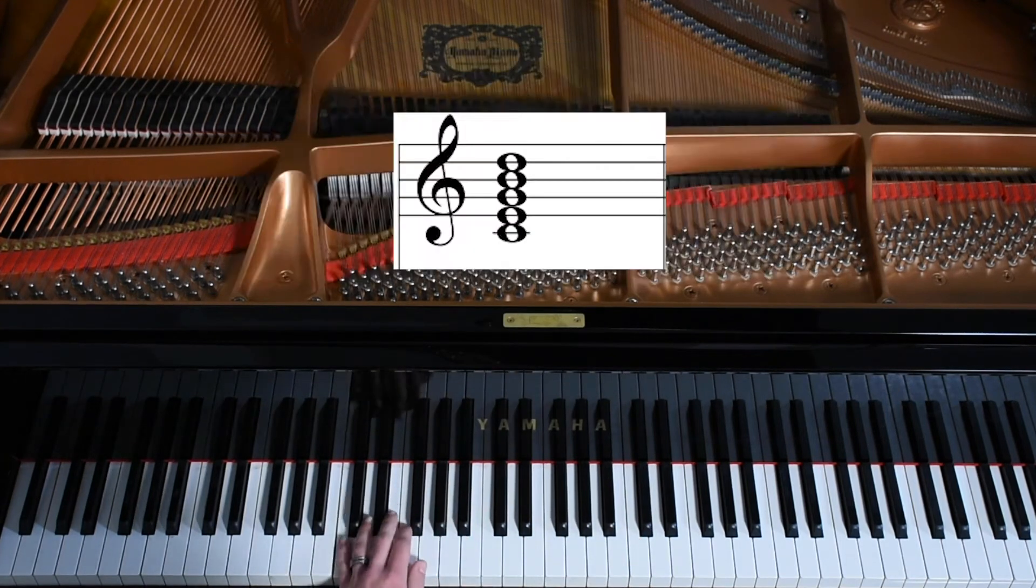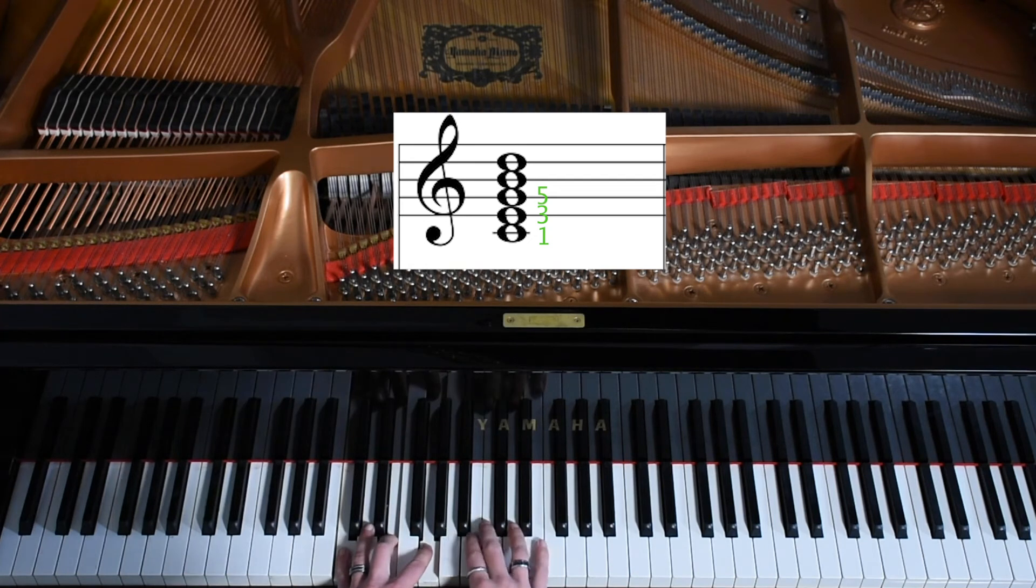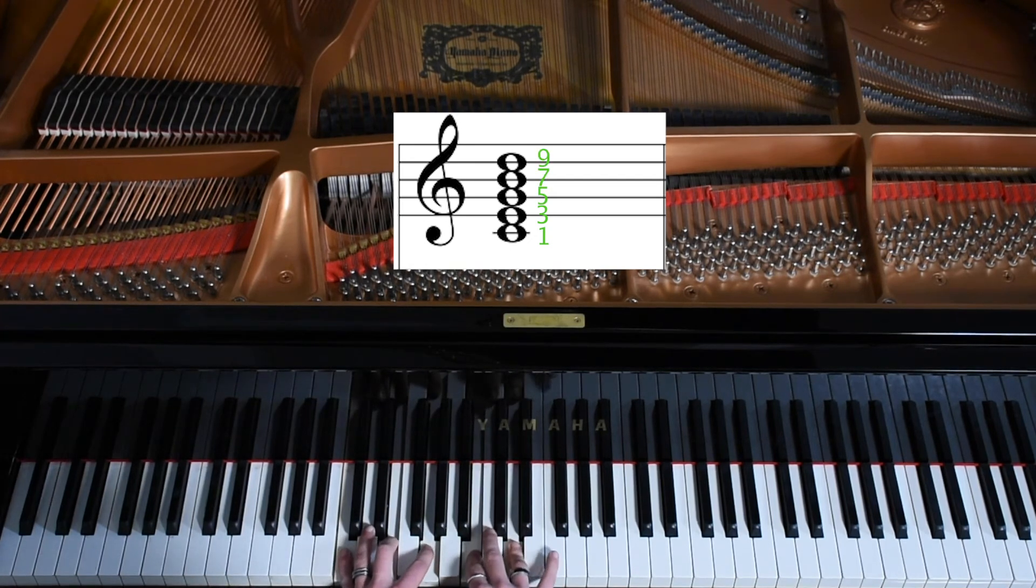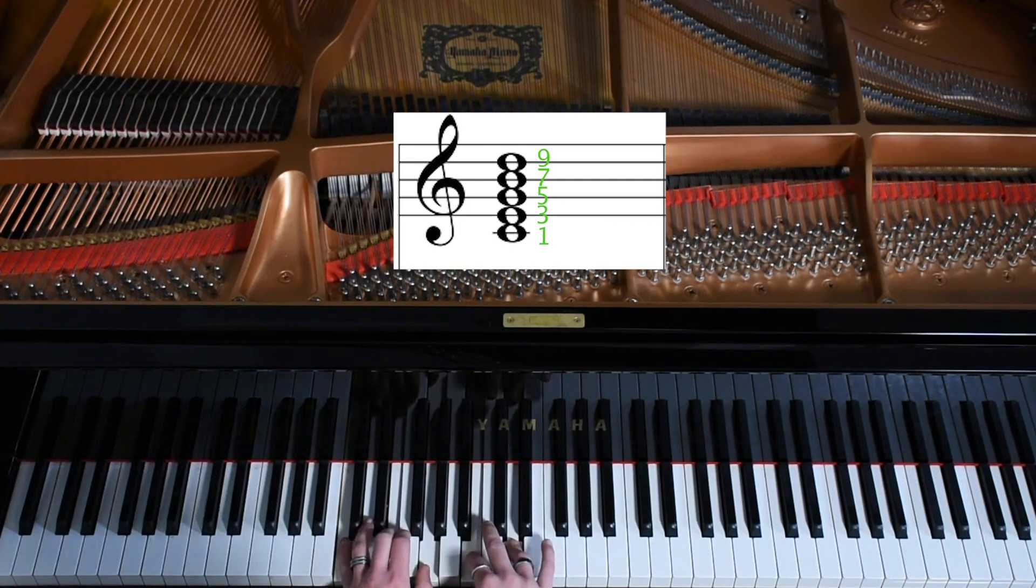And when we play the C major chord, we already have the 1st, the 3rd, and the 5th notes. Now we're going to throw in the 7th and the 9th. You can throw in more, but we're going to make it simple right now and just use the 7th and 9th extensions.